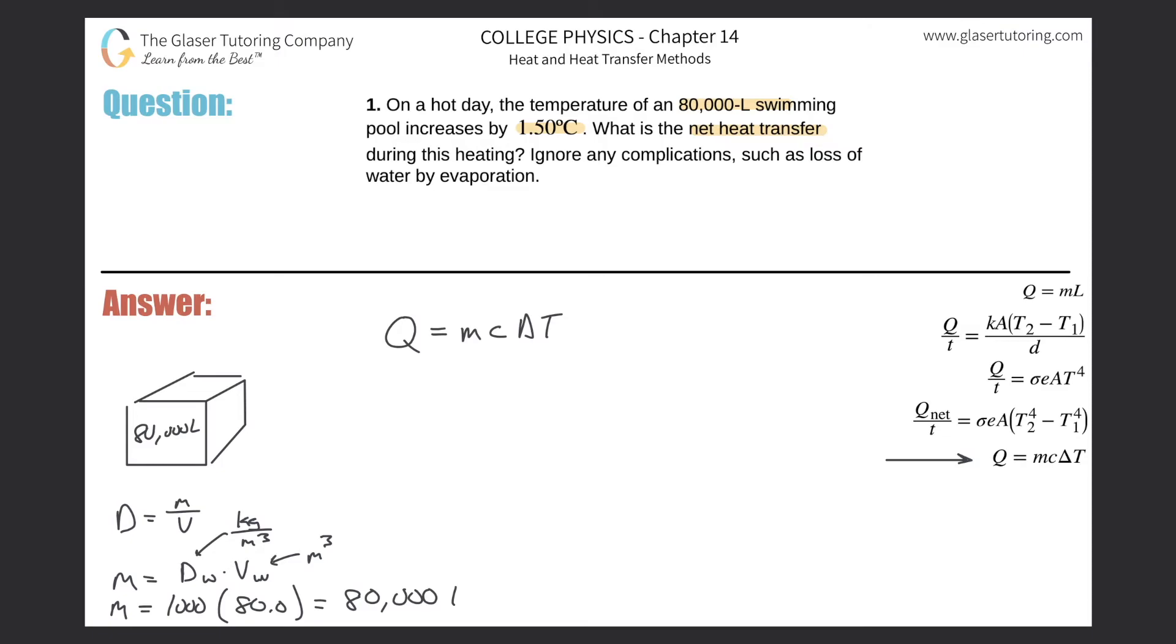When we do this multiplication out, the mass then becomes 80,000 kilograms. Very nice. So we could have just left it the same, and you might be seeing a nice little relationship here that basically if they tell you the liters, it's going to equal the kilograms, assuming you're talking about liquid water.